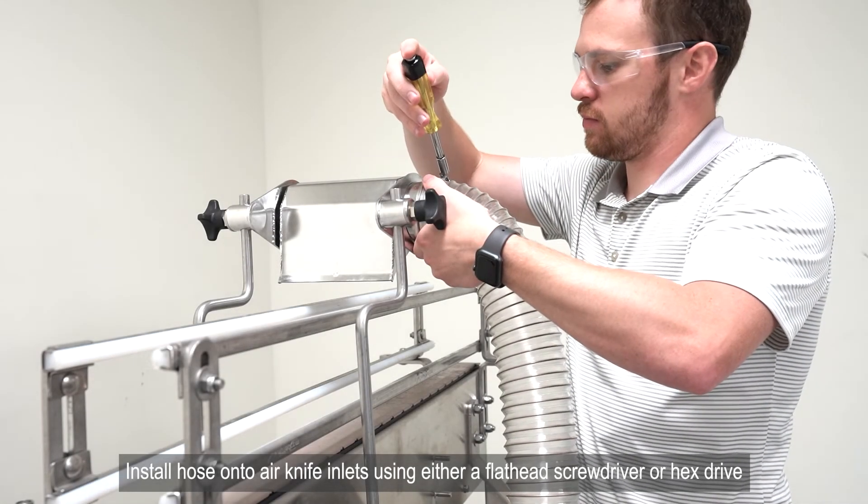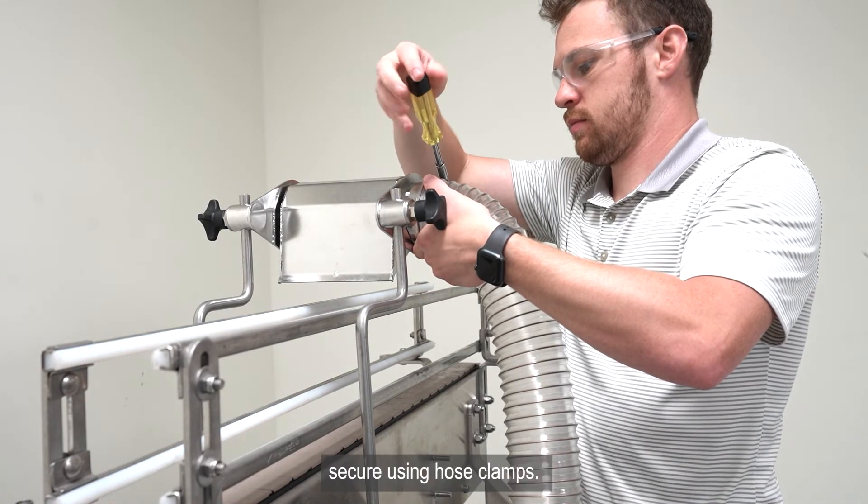Install hose onto air knife inlets using either a flathead screwdriver or hex drive. Secure using hose clamps.